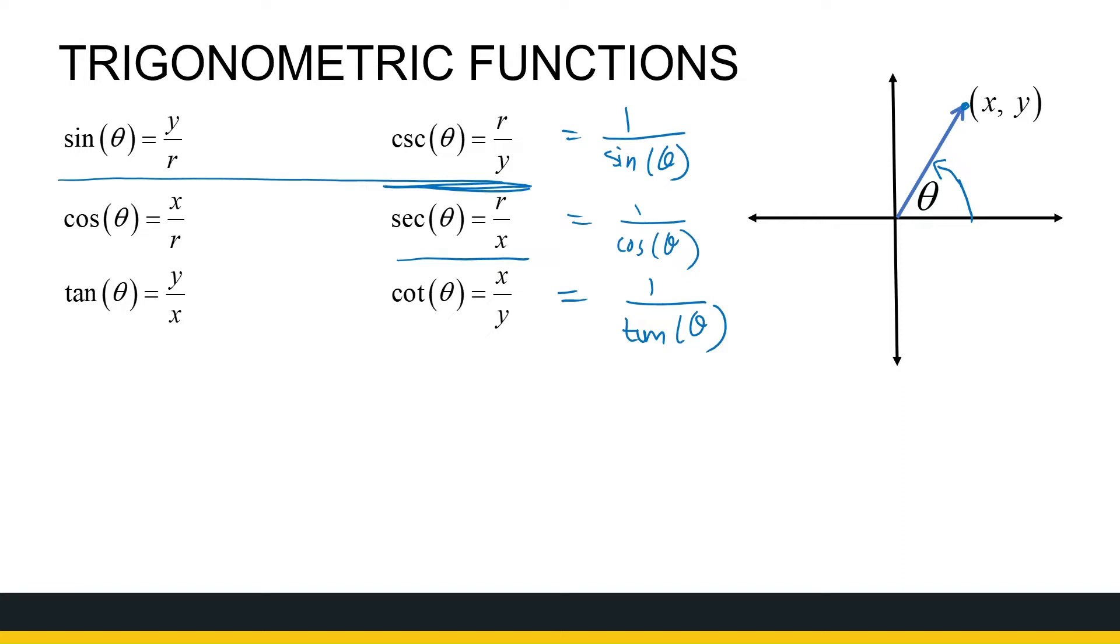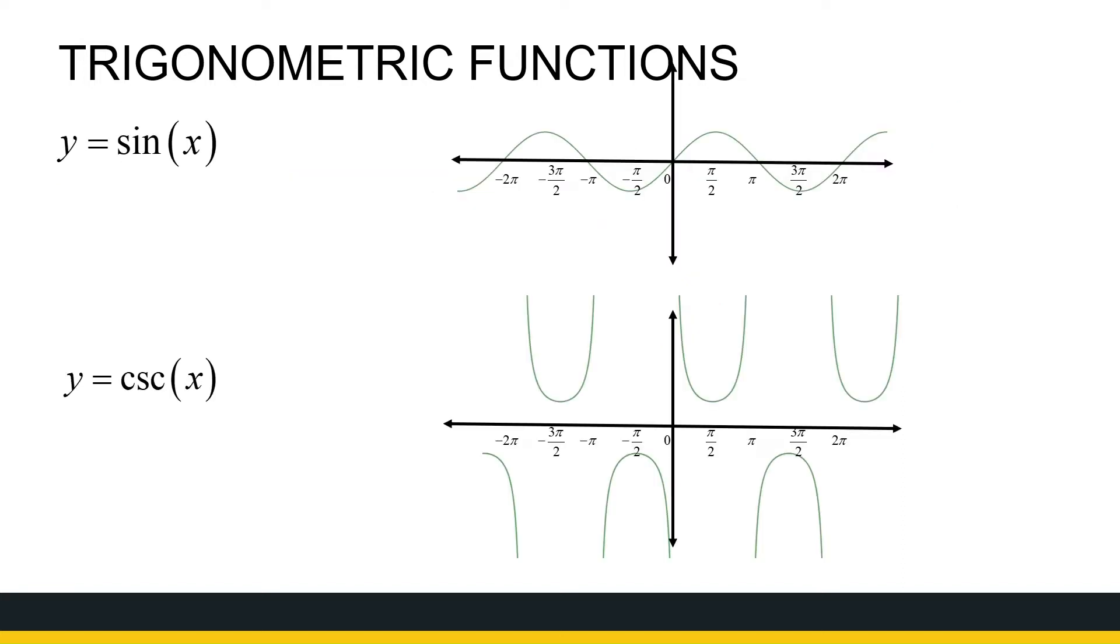In radian measure, the graph of sine of x is a wave function. It fluctuates between minus one and one, and you can plot some points if you're not familiar with it. We've got a wave that cuts the x-axis at zero, pi, and two pi.